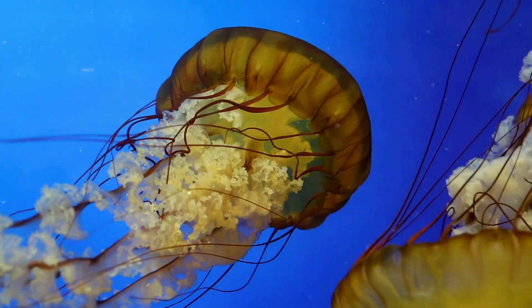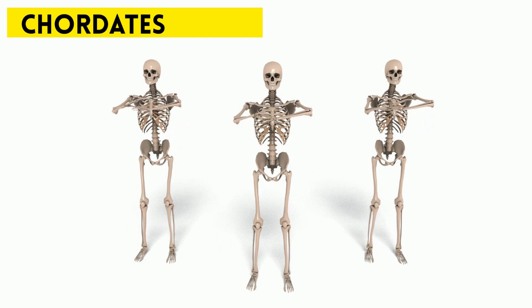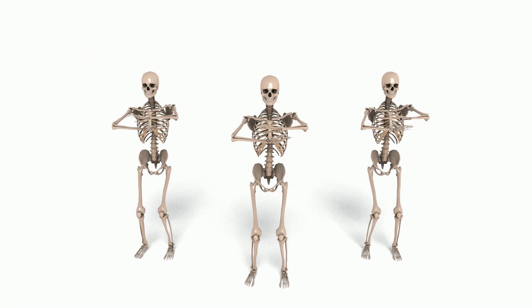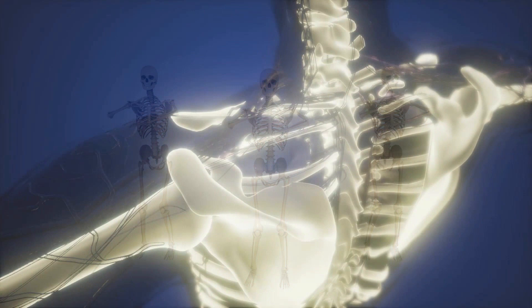Now we have the chordates, which make up only around 5% of all animals. All chordates have a notochord and a hollow nerve chord. And higher chordates, like vertebrates, contain a backbone.